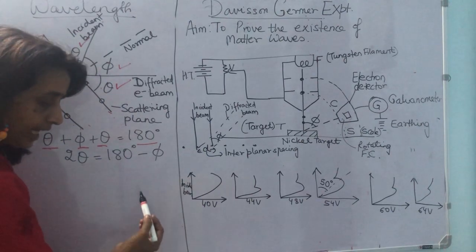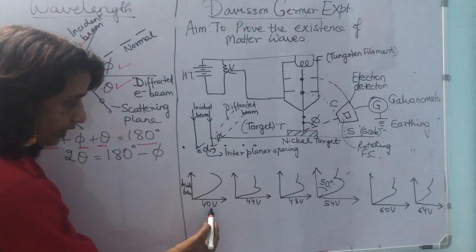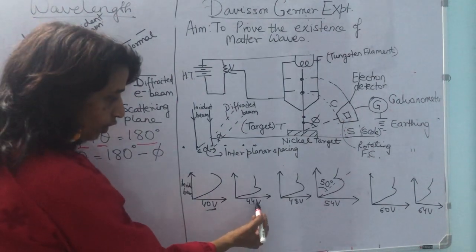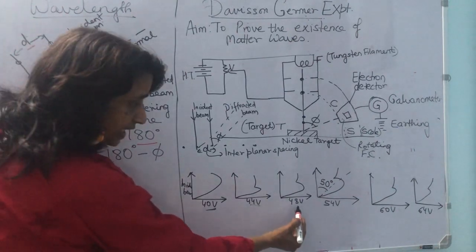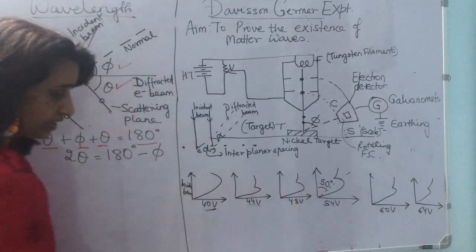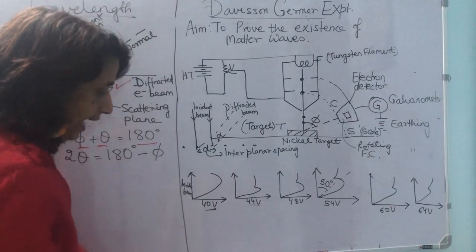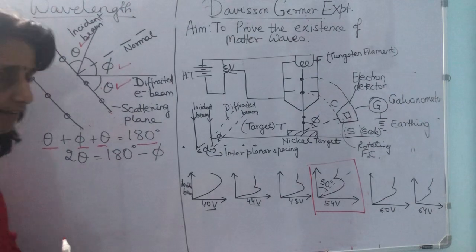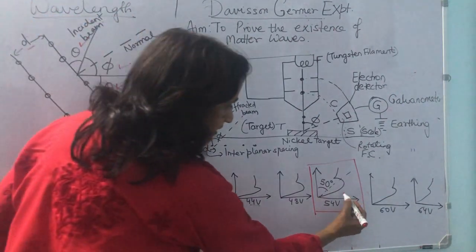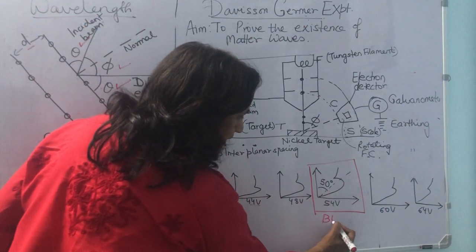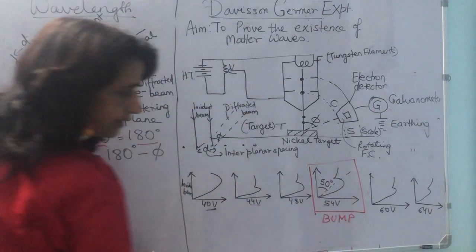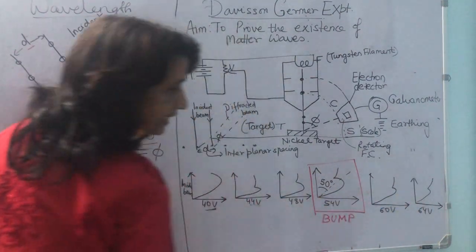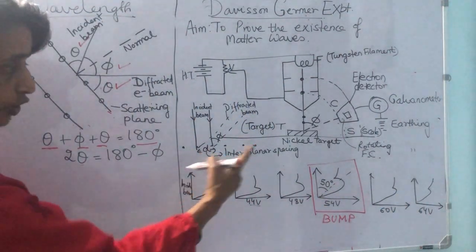When we observe the plot at 40 volt, it is a simple curve. At 44 volt we see a slight bend. At 48 volt this bend has increased a bit, and at 54 volt at an angle of 50 degrees we observe a bump in this curve. After that, the bump starts declining and the graph takes its original form.